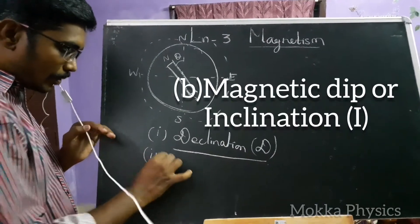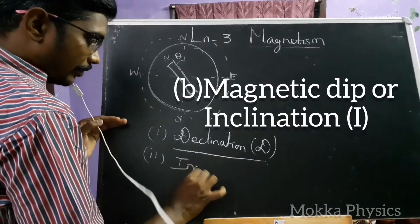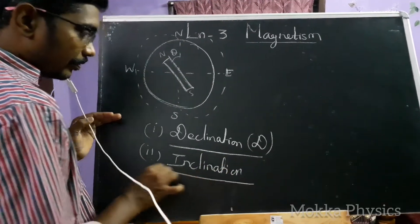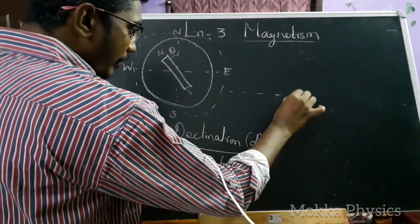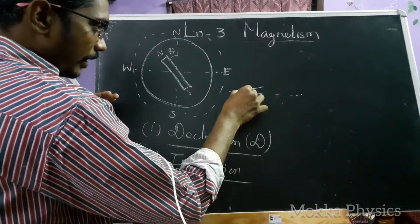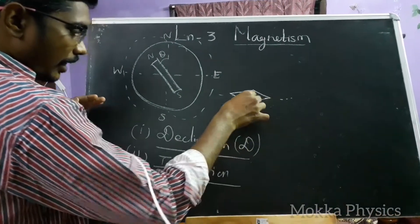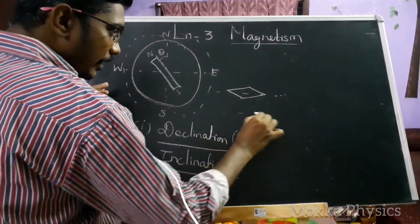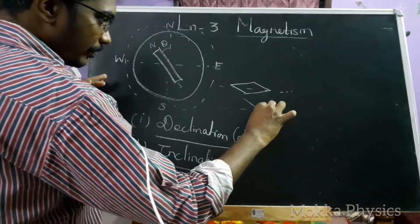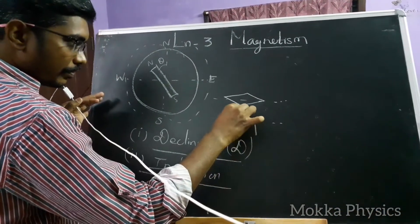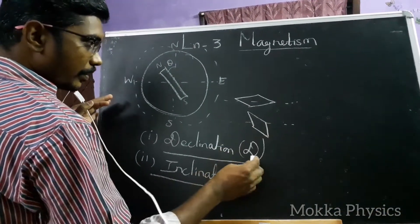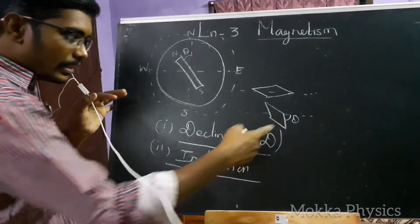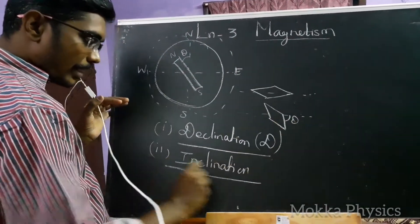The second factor is Inclination. With reference to a horizontal line, if you have a magnetic needle at rest, it makes a particular angle. If you look at this angle, it is the Inclination.